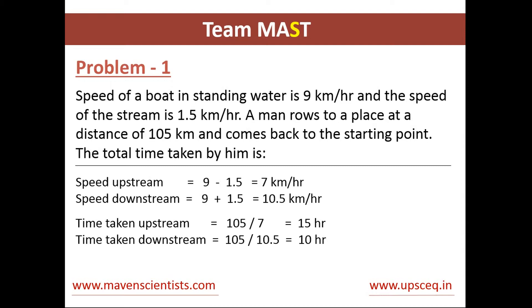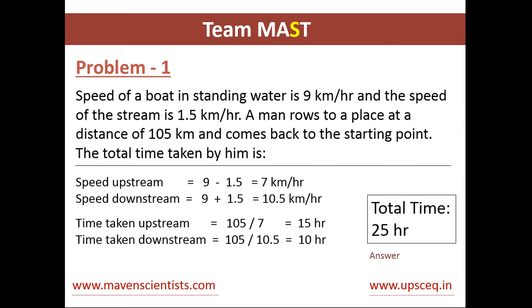Next, we calculate the time taken upstream and downstream. The distance is 105 km. Using the time-distance formula — time equals distance divided by speed — the time taken upstream is 105 divided by 7, which equals 15 hours, and for downstream we get 10 hours. Adding these two gives us 25 hours as the answer.